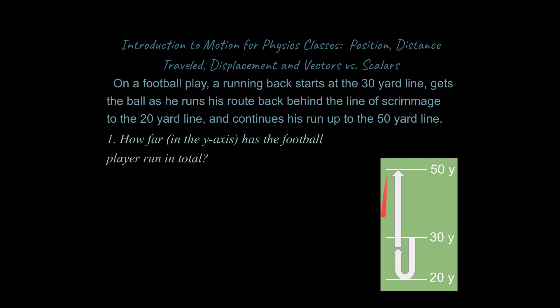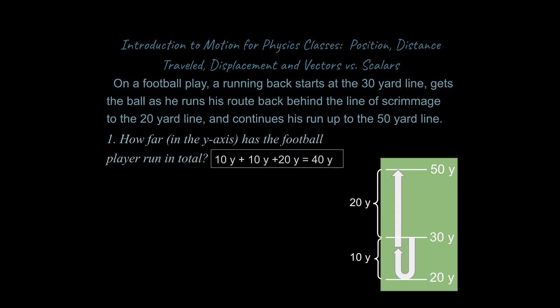We're focused only on the y-axis — this up-and-down axis — not the x-axis. The question is how far has the football player run in total, and note this is not asking about yards gained or lost on the play. This running back ran 10 yards backwards, 10 yards forwards, and plus another 20 yards. So the sum is going to be 40 yards in total. I'm not calling it negative 10 yards when he runs backwards — I'm asking how far he ran without respect to direction. That is called distance traveled.